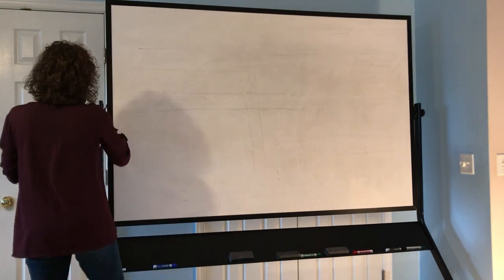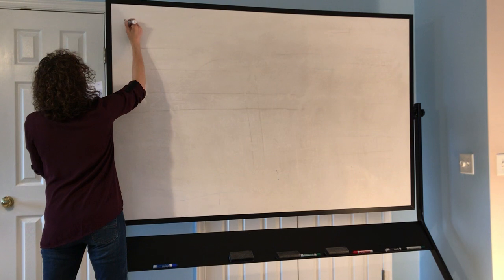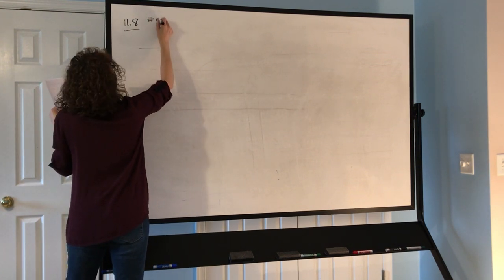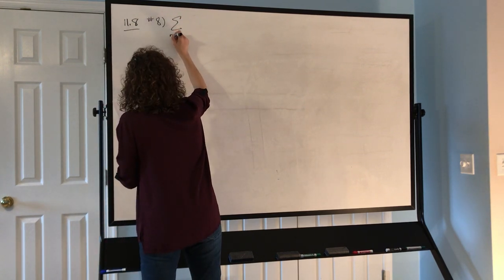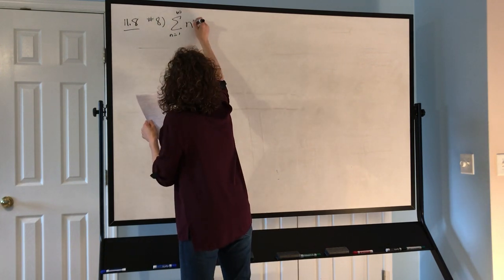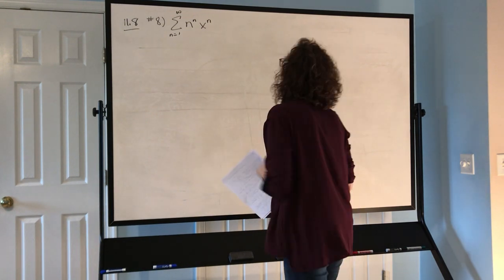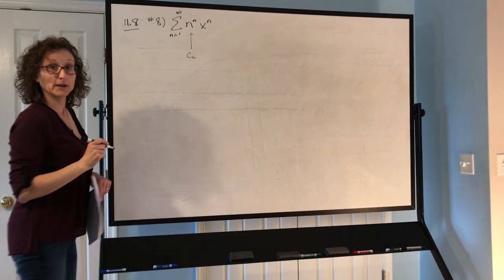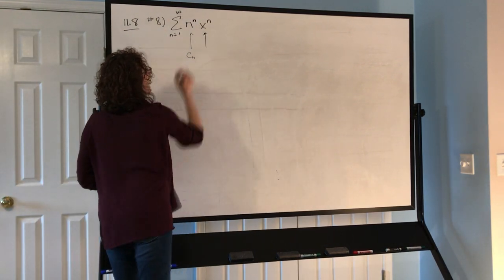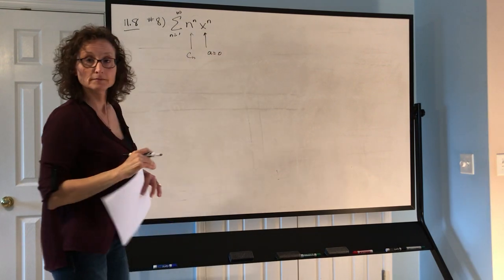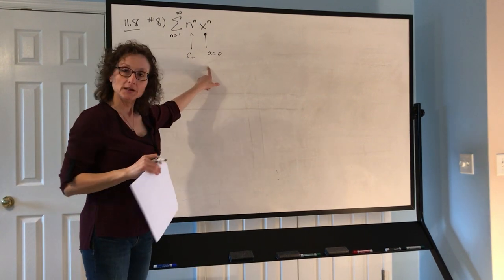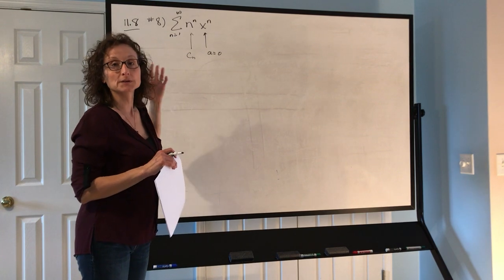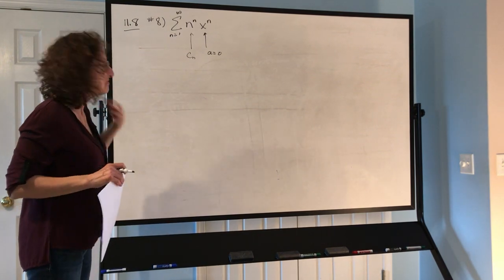Now let's do homework problem 11.8 number 8: the sum from n equals 1 to infinity of n^n times x^n. Here c_n equals n^n and a equals 0, so it's centered at zero. The coefficients are going to change what happens with convergence — different coefficients, different convergence. Rather than the ratio test, let's use the root test since it will be simpler here.